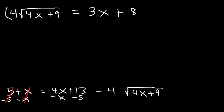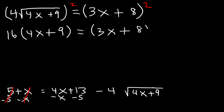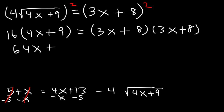Now let's square both sides to completely get rid of the radical. The square of 4 is 16 — we don't have to FOIL because the 4 is multiplied to the radical. The square of root 4x plus 9 is just 4x plus 9, since the square cancels the radical. On the right, 3x plus 8 squared requires FOILing because of the plus sign separating 3x and 8. On the left, distributing 16: 16 times 4 is 64, and 16 times 9 is 144.